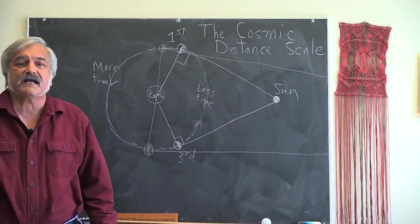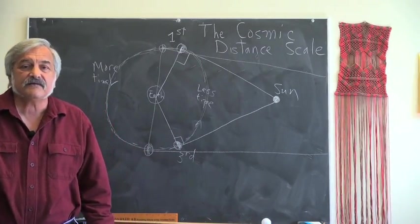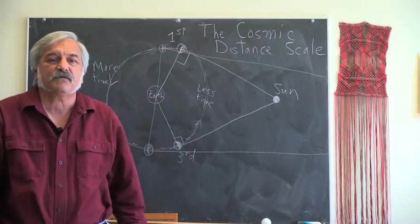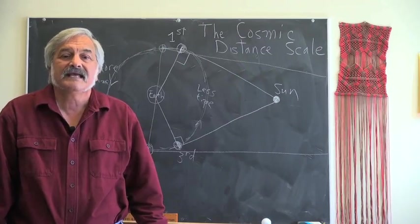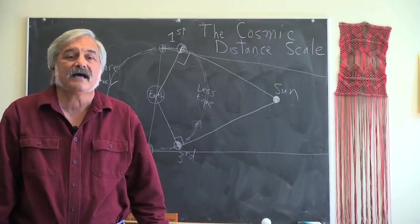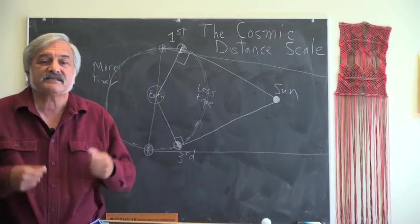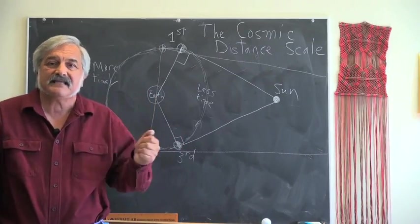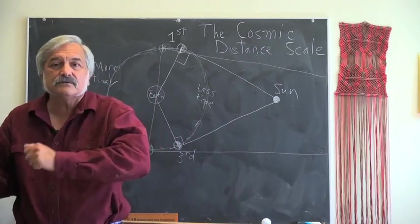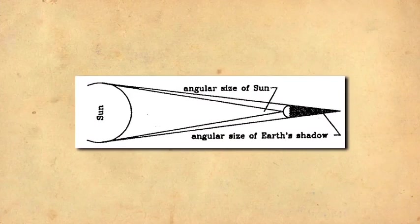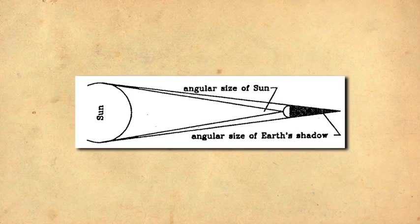Although Aristarchus's result was not particularly accurate, it was good enough to realize that the Sun must be much farther away from the Earth than the Moon. His value was 19 times further. Thus, the Sun must be 19 times larger, since the angular extent was the same as the Moon in the sky. With the Sun much further away from the Earth than the Moon, the angle of the Earth's shadow is about the same as the angular size of the Sun and the Moon in the sky. Let's look at that part carefully.